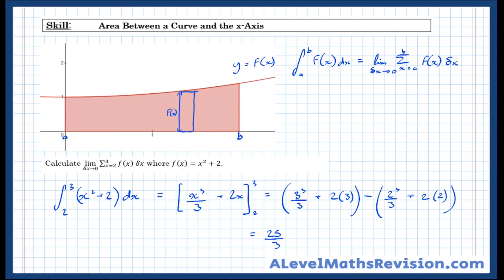Which is equal to 25 over 3. And there we have it, summing an infinite number of rectangles to get the area between the curve and the x-axis.